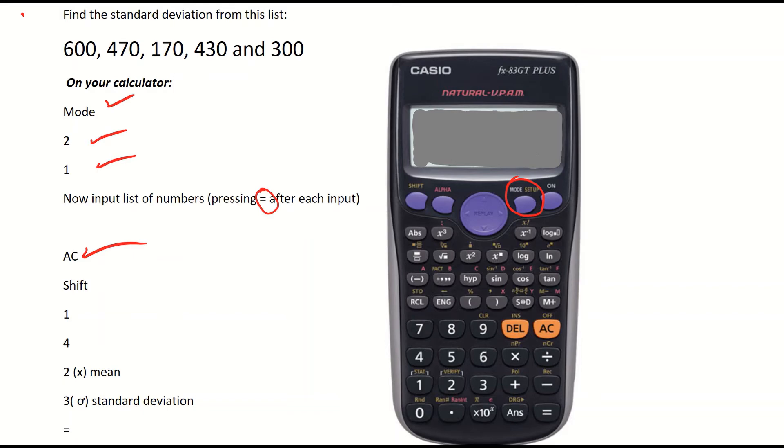Now I want to find the mean and standard deviation. So in order to find them you hit the shift key on your calculator, top left hand corner. I've highlighted it there in red on the image.